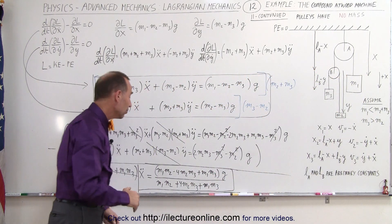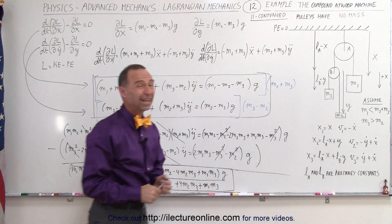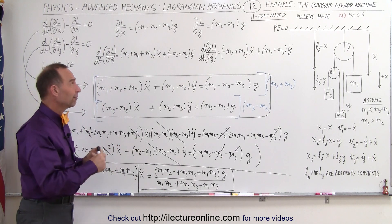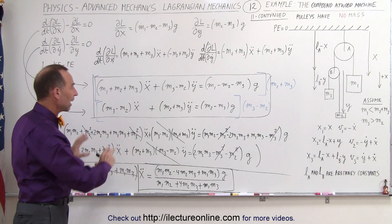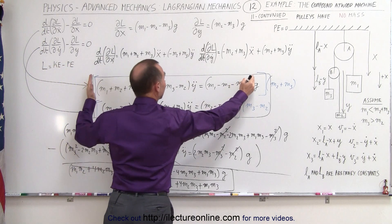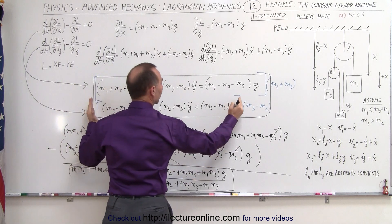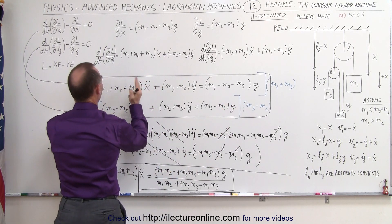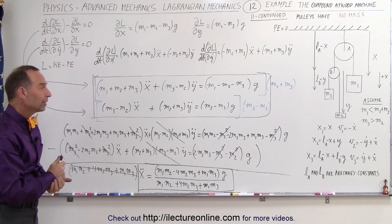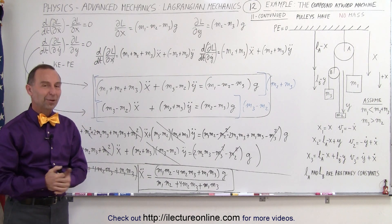Now we need to do a similar thing to get the acceleration for m2 and m3. Since we're out of board space, we'll do another video for part 3, where we algebraically solve for y-double-dot — multiplying the first equation by the coefficient in front of x-double-dot in the second equation, and vice versa — to find the acceleration for m2 and m3. And that's how it's done.